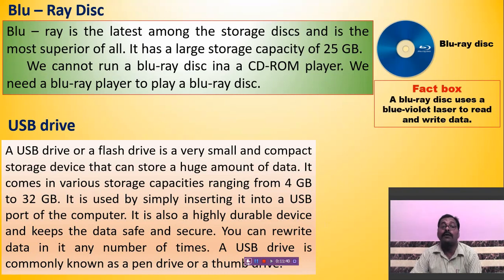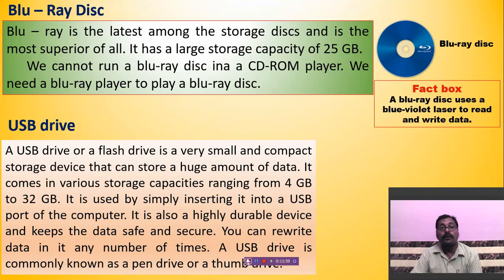You can store a large amount of data on a USB drive and it is very small and easy to carry. It is a pen-like device — that's why the secondary name of a USB drive is a pen drive. It comes in various storage capacities ranging from 4 GB to 32 GB.